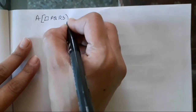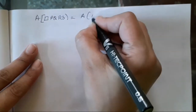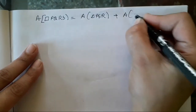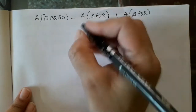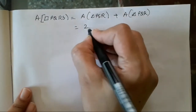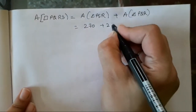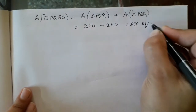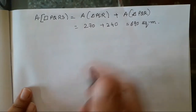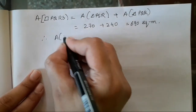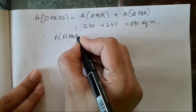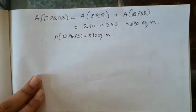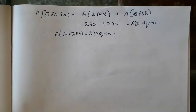Area of quadrilateral PQRS = area of PSR + area of PQR, since we have two triangles. So 270 + 420 = 690 square meters. Therefore, area of quadrilateral PQRS = 690 square meters.